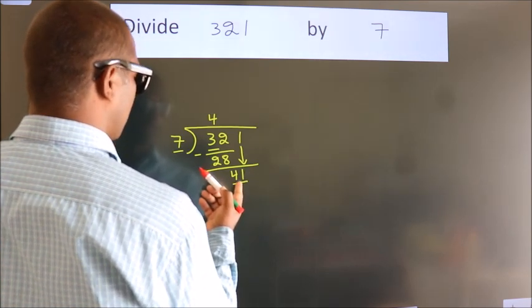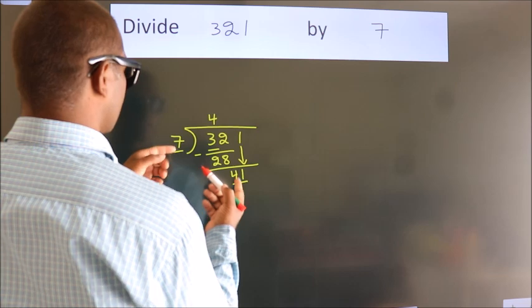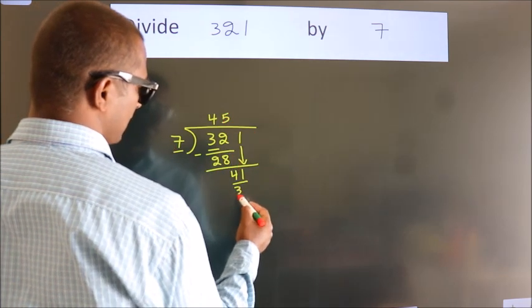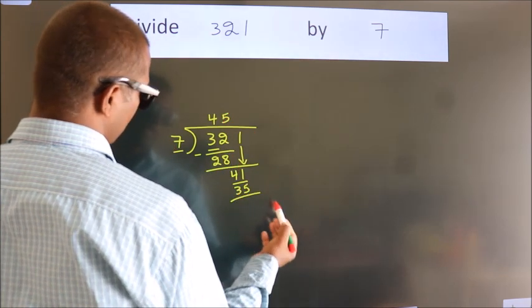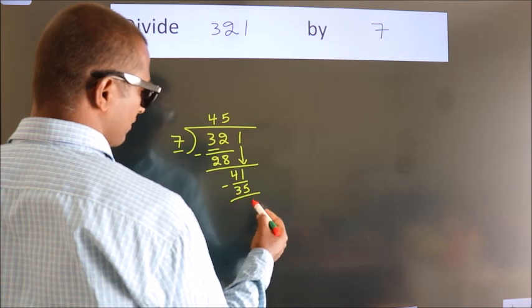A number close to 41 in the 7 table is 7 fives, 35. Now we subtract. We get 6.